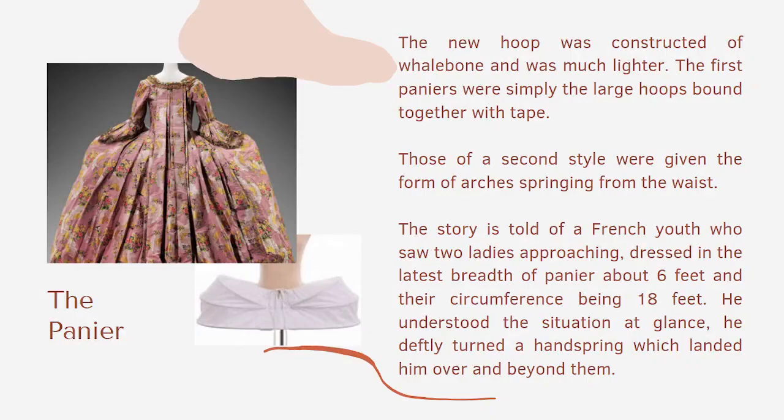The first panier was simply a large hoop bound together with tape. Those of the second style were given the form of arches springing from the waist. The story is told of a French youth who saw two ladies approaching dressed in the latest breadth of panier — about 6 feet wide, with a circumference of 18 feet. He understood the situation at a glance and deftly turned a handspring which landed him over and beyond them.